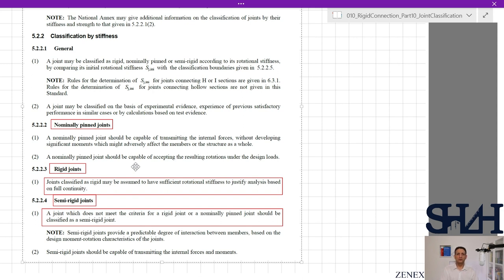This is also the same: after having a certain amount of stiffness, the behavior can be assumed completely rigid. Semi-rigid joints: a joint which does not meet the criteria for a rigid joint or a nominally pinned joint should be classified as a semi-rigid joint. Semi-rigid joints provide a predictable degree of interaction between members based on the design moment rotation characteristic of the joint.